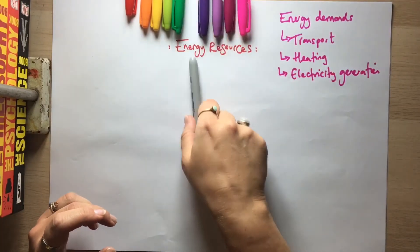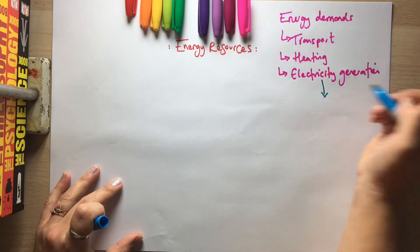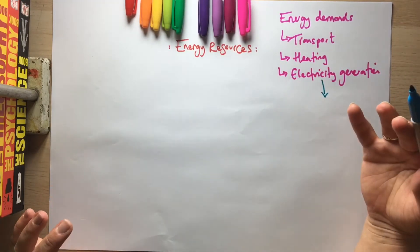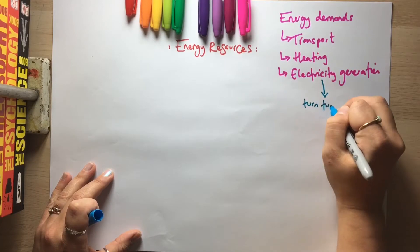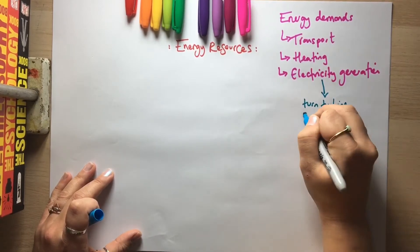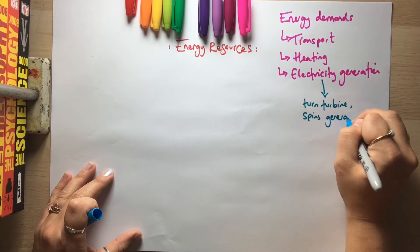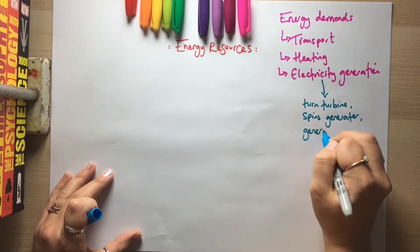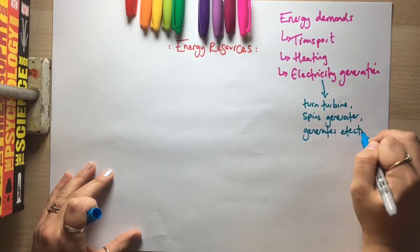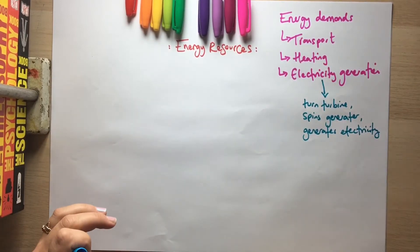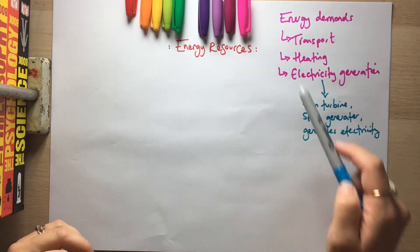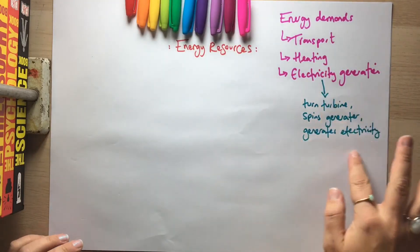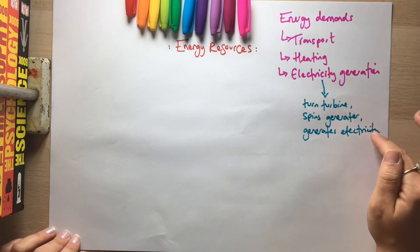With electricity generation, most of the time we're talking about generating electricity by something turning a turbine, which spins a generator, which generates electricity. For paper two you'll cover electromagnetism and how we generate electricity, but the key process is: you turn a turbine, this spins a generator, and electricity is generated.